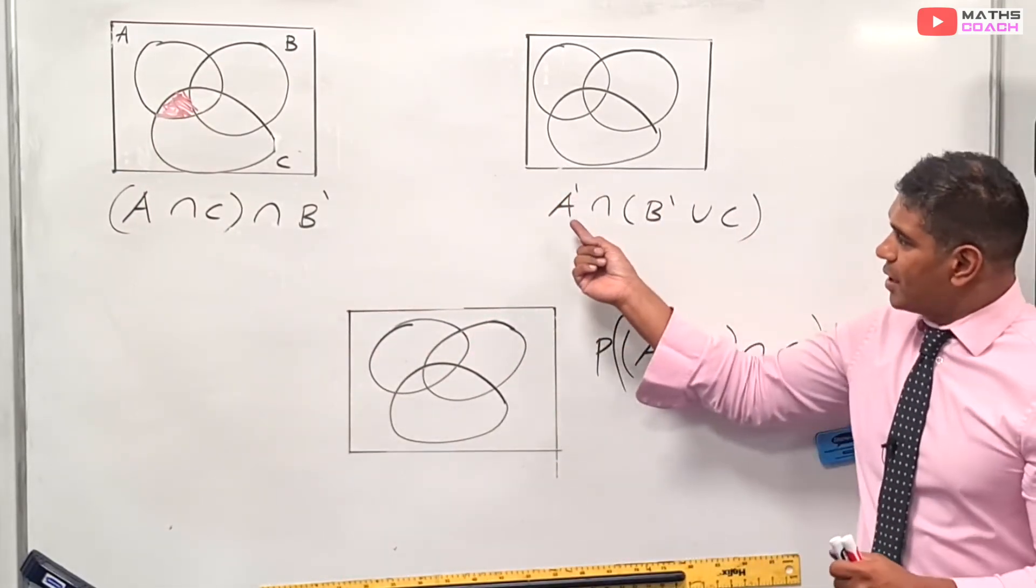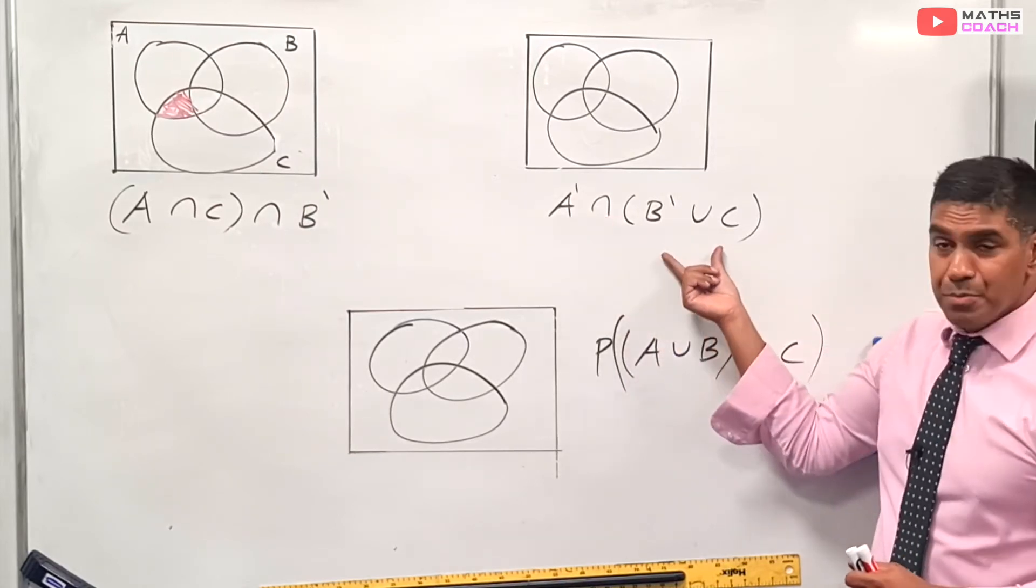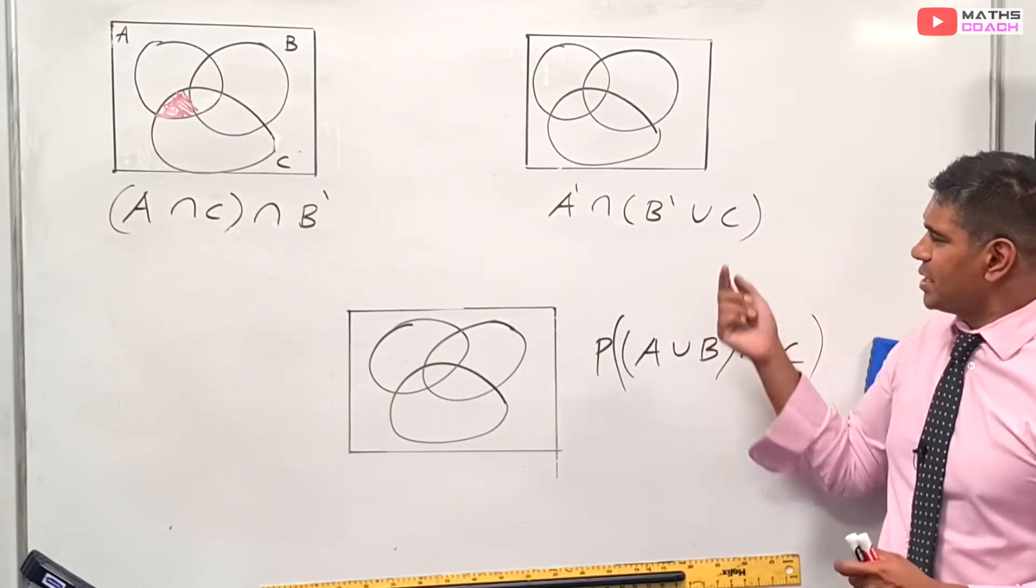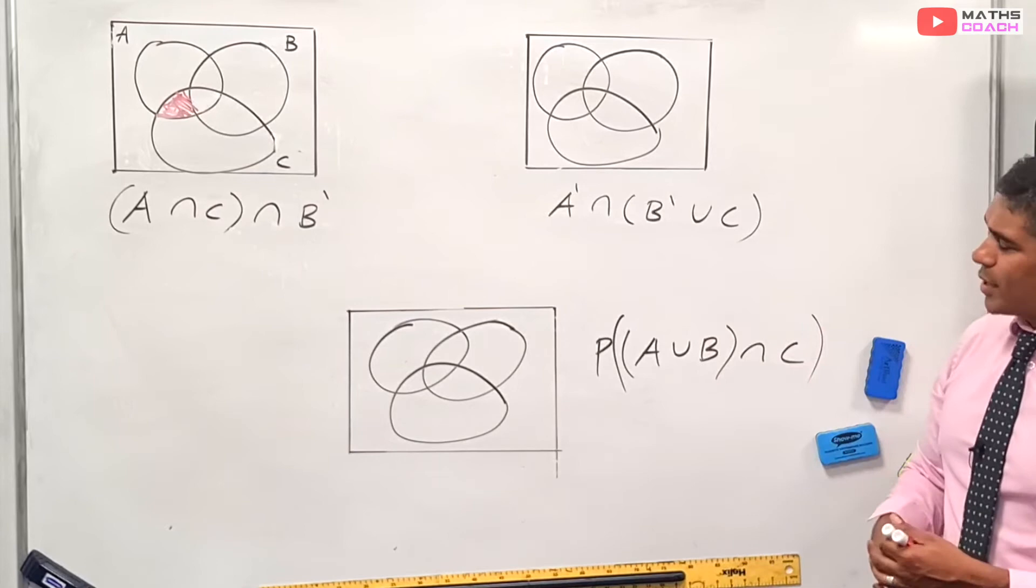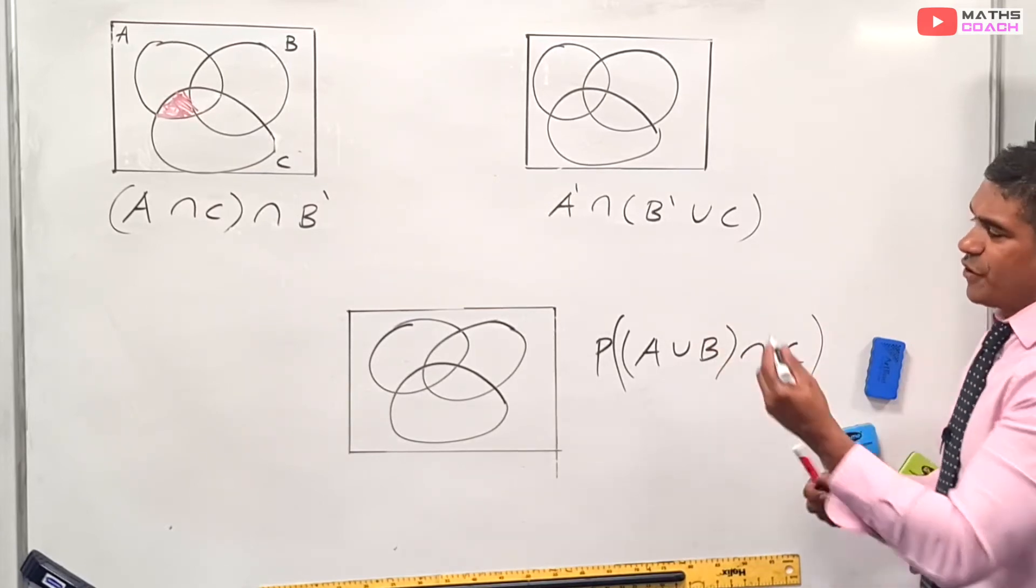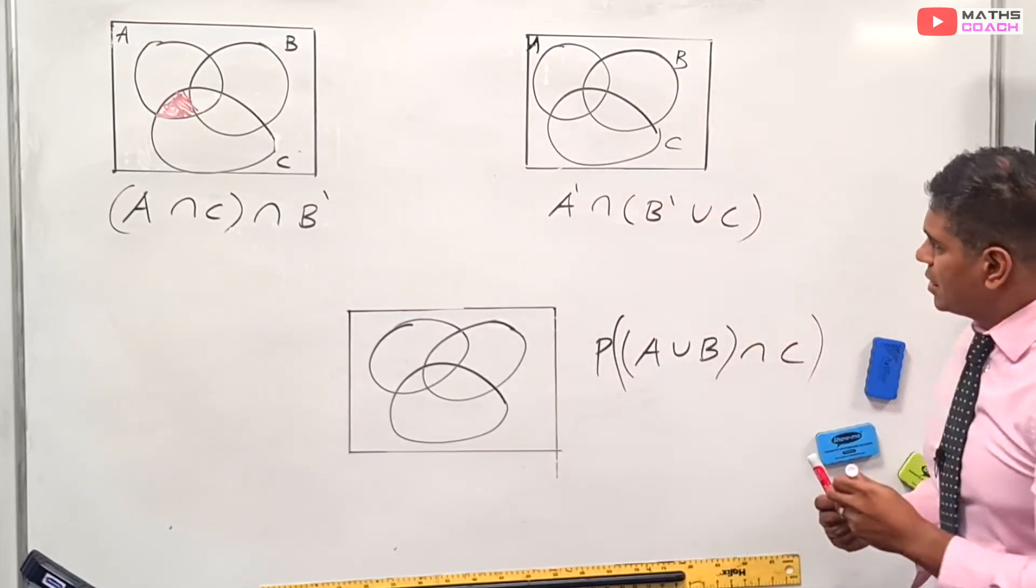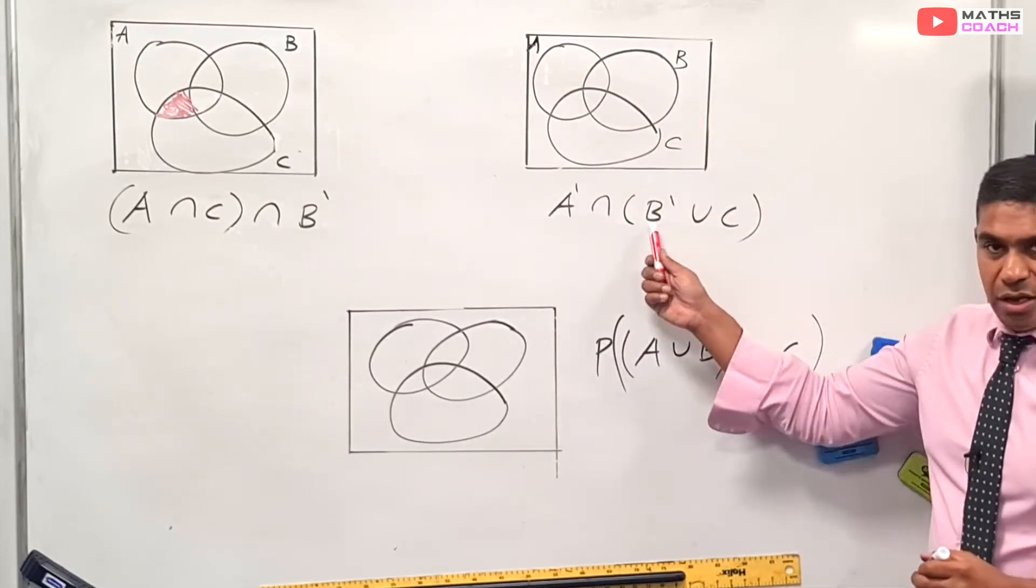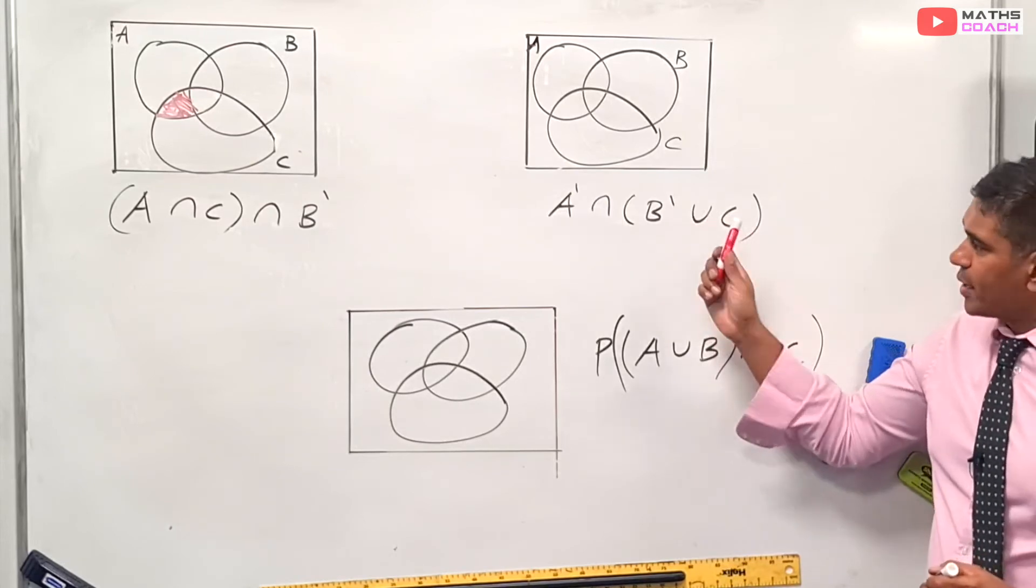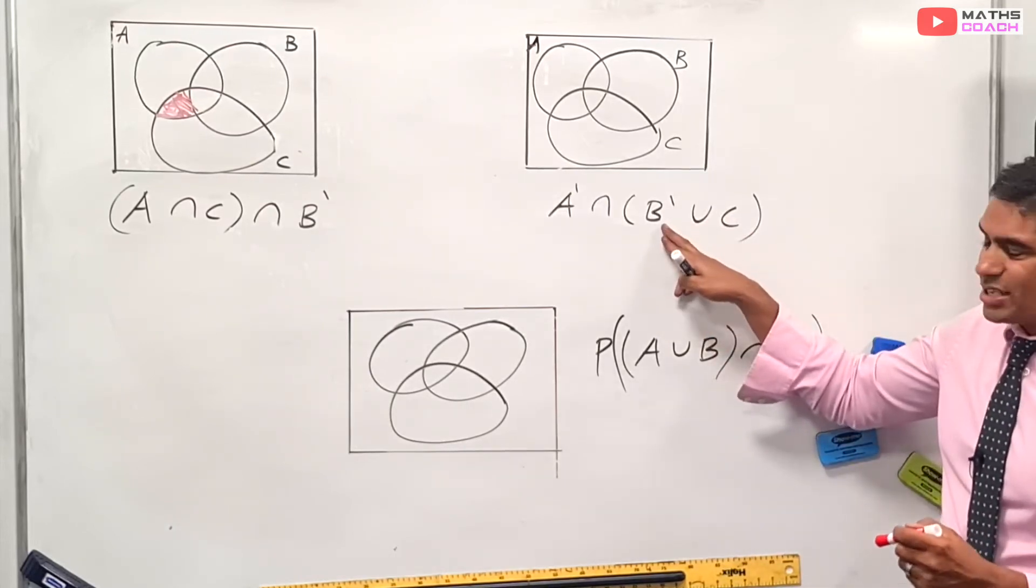Looking at the next one, A'∩, and in brackets, B'∪C. Well, we need to look at the brackets first. So let's just label my A, B, and C. And there's a union, or ∪, involved in the bracket. So let's use the ticks.